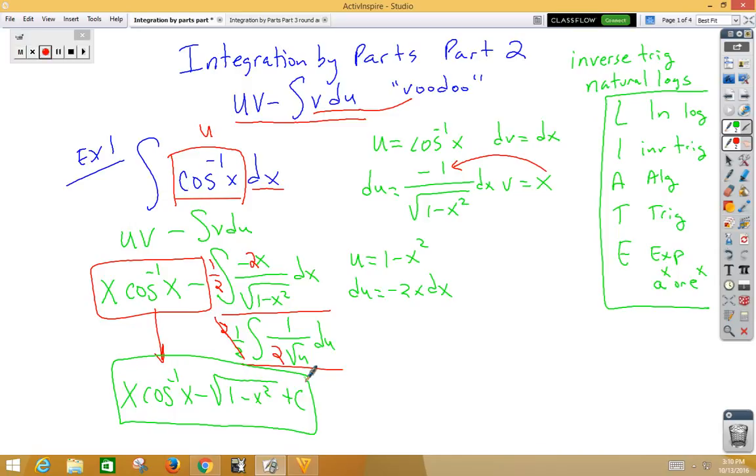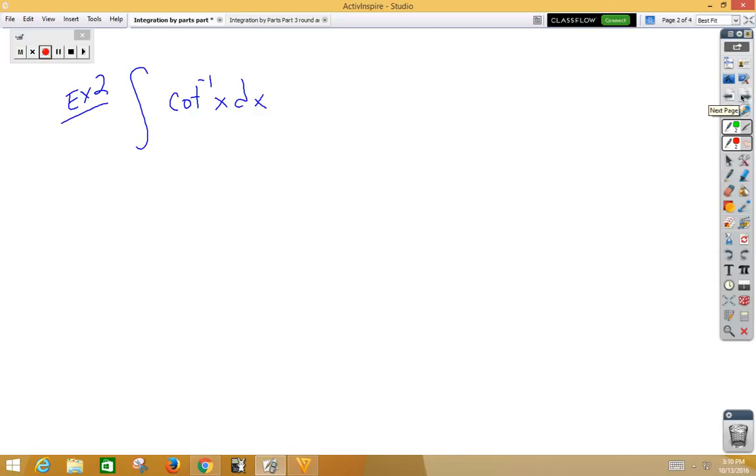Let's do another example. In our second example, again, we're using LIATE to help us choose u. Are there any logarithms? No. Are there any inverse trig? Yes. So u is inverse cotangent x. That would be this piece, which means that dv is, again, 1 dx. When I integrate 1, I get x.